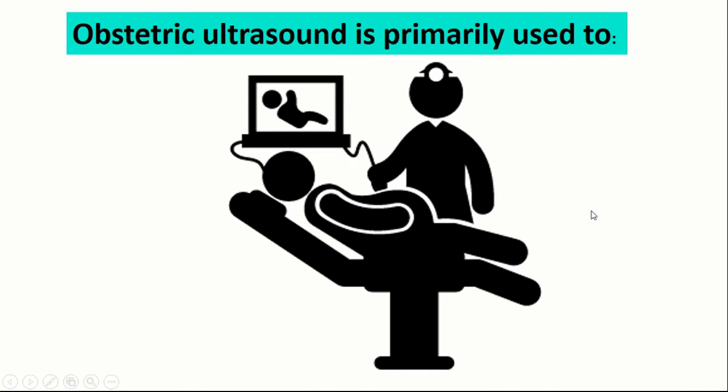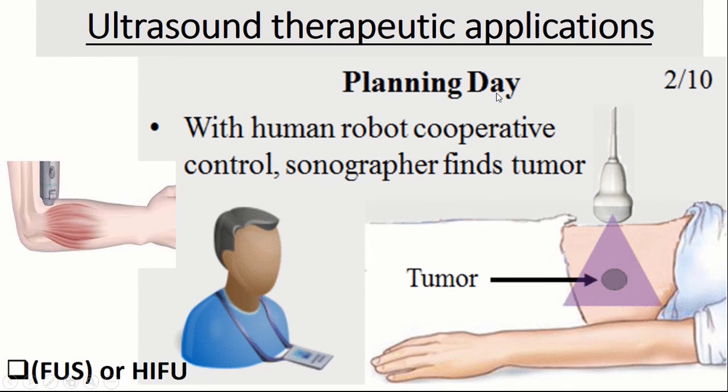Obstetric ultrasound is primarily used to check the date of pregnancy, check the location of placenta, check for the number of fetuses, check for abnormalities, check the sex of the baby, to check the fetal movements, breathing and heartbeat of the baby.